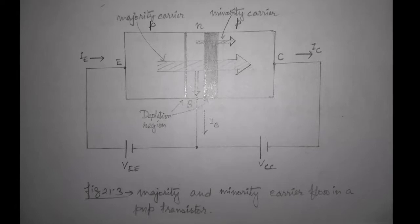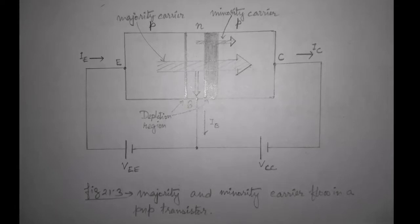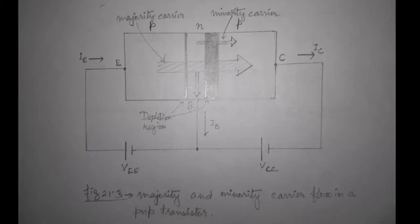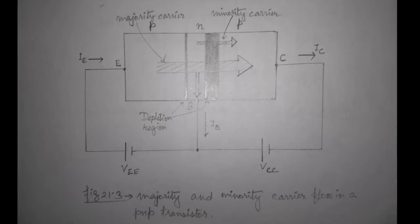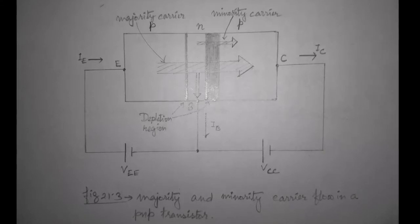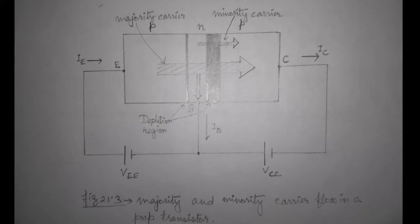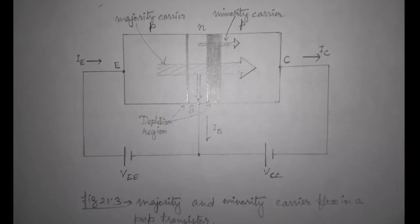Now, let us consider both the biasing potentials together. The flow of majority and minority carriers is shown by the arrows. The thickness of the depletion regions indicate the forward and reverse biasing. A large number of majority carriers will diffuse across forward bias PN junction into the N-type material.